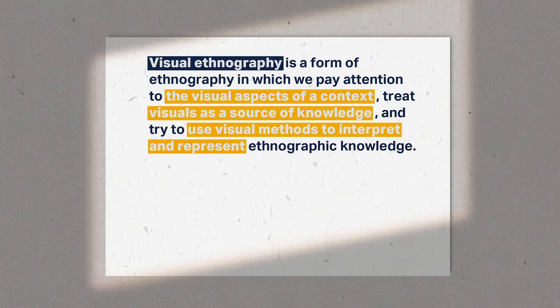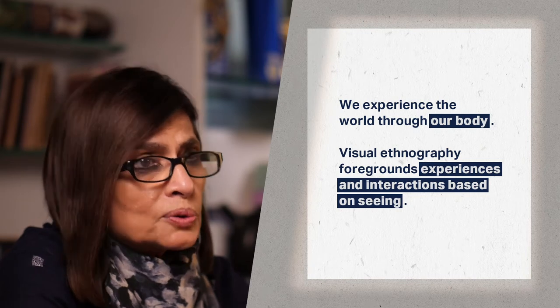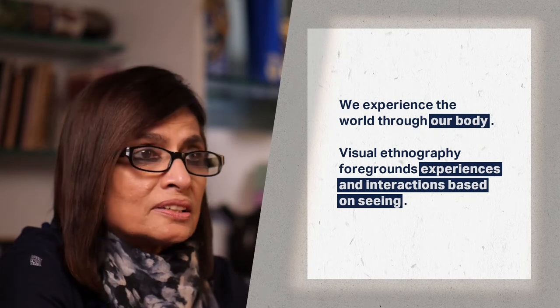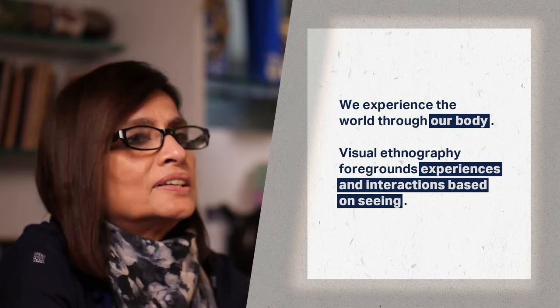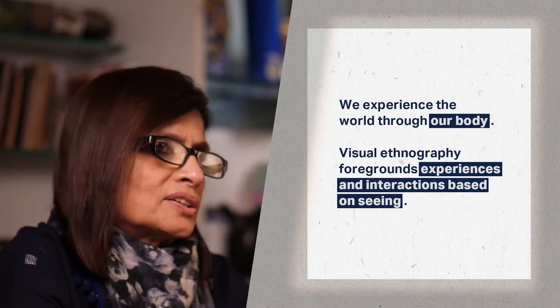As the name suggests, visual ethnography emphasizes the centrality of the visual in our experience of the world. Our understanding and knowledge of our world is rooted in how we experience it through our bodily interactions, particularly through sight or seeing. Visual ethnography gives primacy to our visual or sight-based experiences and understanding.